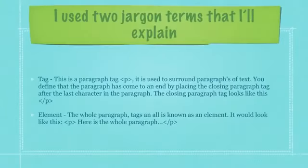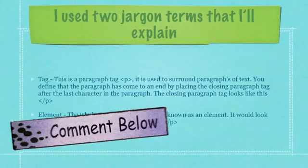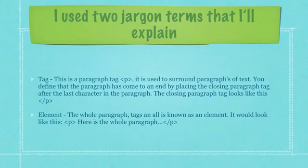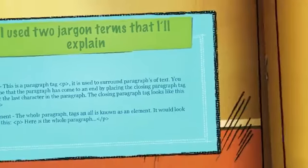On the previous slide, I used two jargon terms that I'll explain now, being tags and elements. This is a paragraph tag. It is used to surround paragraphs of text. You define that a paragraph has come to an end by placing the closing paragraph tag after the last character in the paragraph. The closing paragraph tag looks like this. In regards to an element, the whole paragraph — tags and all — is known as an element. It would look like this: with an opening paragraph tag, which encloses all of the words that go into the paragraph, and a closing paragraph tag.